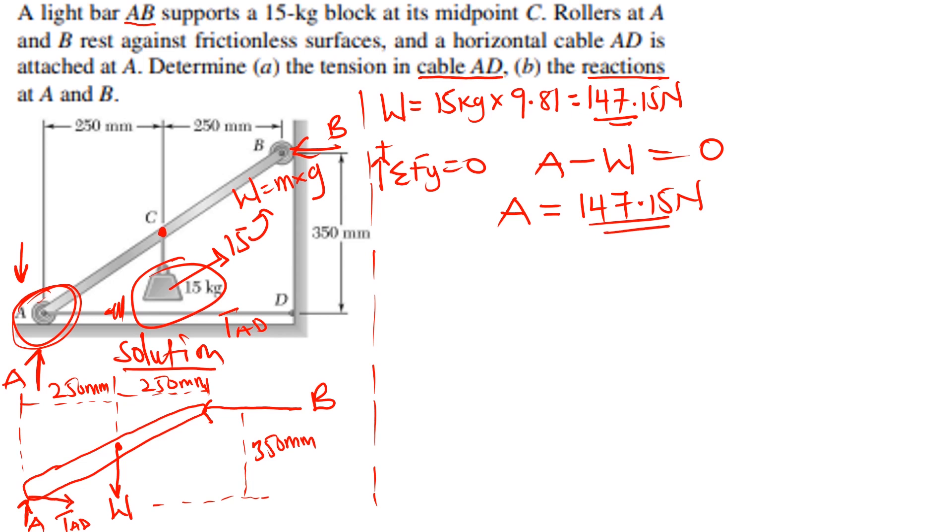We can also apply summation of forces such that x is equal to zero. We will take forces in this direction to be positive. The horizontal forces, we have TAD, which is tension in the cable AD. The tension is in the positive direction. B is in the negative direction. That should give us zero. Let's call this equation one.